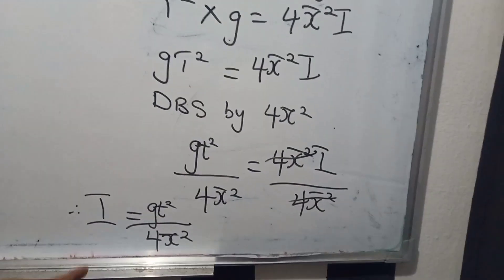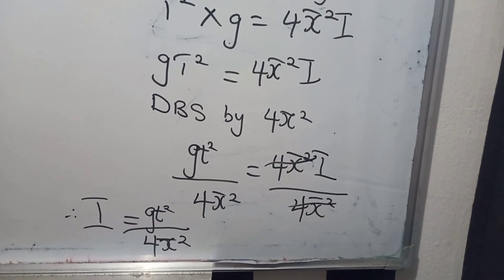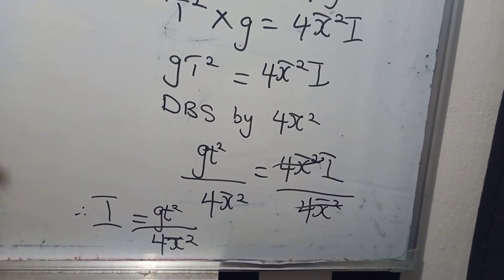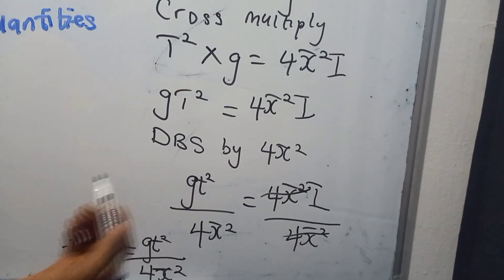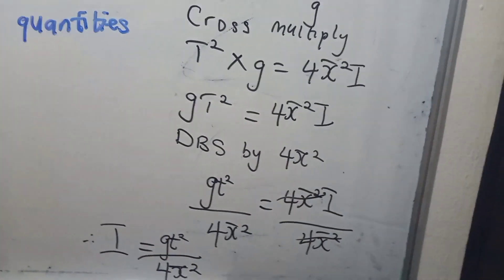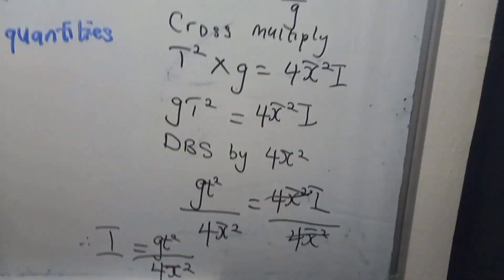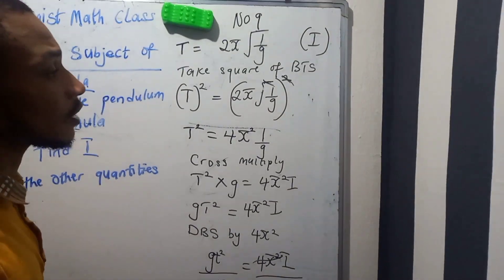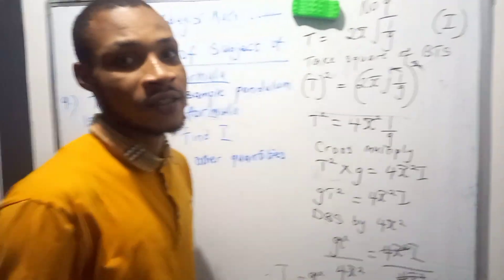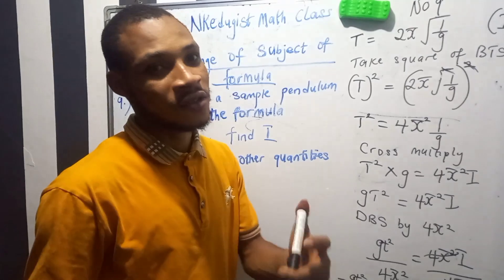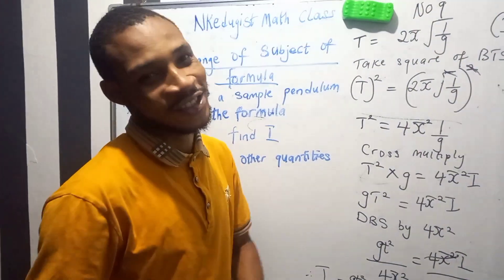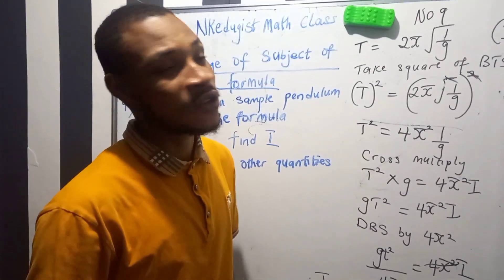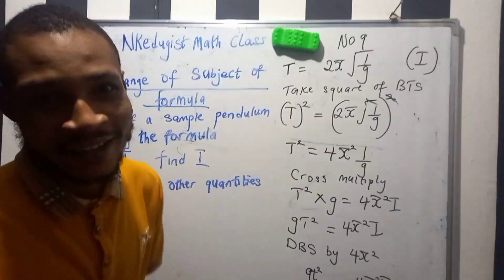So i equals gt squared over four pi squared. This is our formula and this is our final answer. If today is the first time supporting our YouTube channel, please kindly subscribe, drop a comment, and share. See you in the next video for number 10. Bye bye.